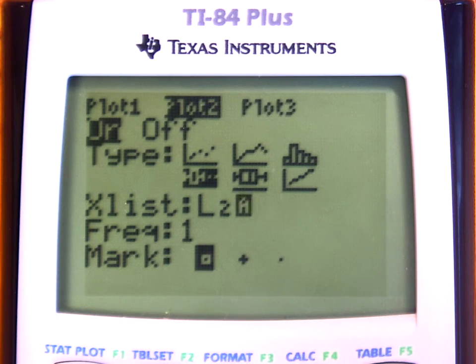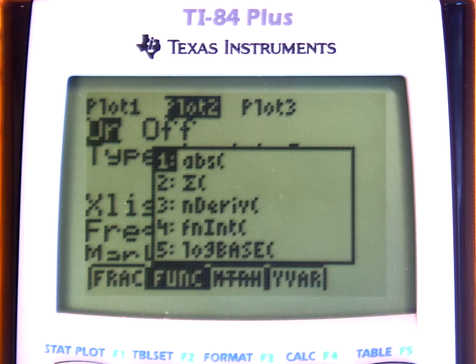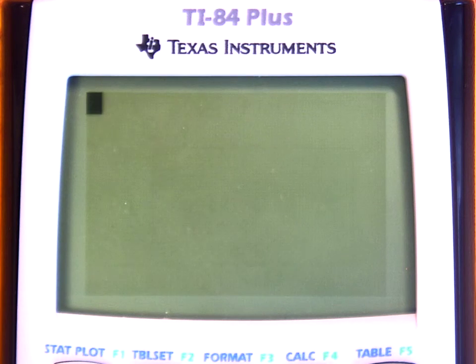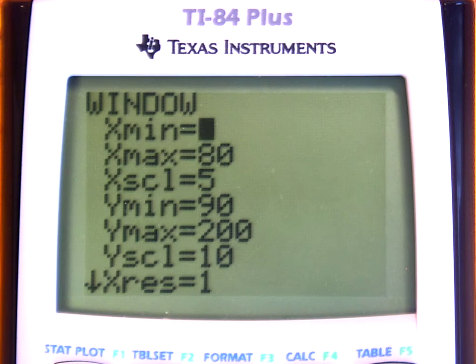Now I need to set a good window. So, oops, see what I did? I didn't want to be there. So if you end up in a menu where you don't want to be, a good way to get out of it is to press second mode or second quit. Now I'll press the window button to get to the window where I want to be.